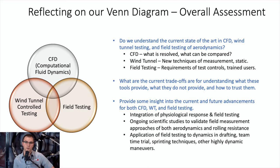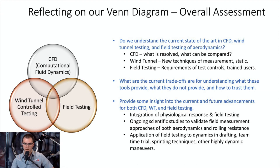Ongoing scientific studies are needed to validate these field measurement approaches for aerodynamics, which allow studying dynamic changing rider positions, drafting, and things like that. Applications to team time trials, sprinting techniques, and other highly dynamic maneuvers are things I see coming. We need to continue pushing forward on scientific studies, validating and comparing results from CFD, wind tunnel, and field testing. I'll leave it there as I'm a minute or two over — happy to answer questions.